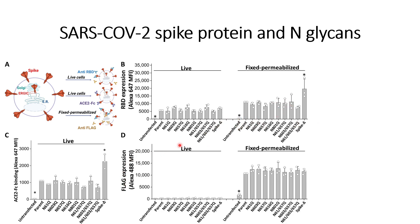Subsequently, they analyzed the S2 part on the cell surface and also within the cells. On the cell surface they did not see any S2 part — not for the parent, not for spike-delta, and not for the other mutants. For the fixed and permeabilized cells, to check the intracellular amount of the S2 part of the spike protein, they can see that almost all levels are similar and comparable to the parent.